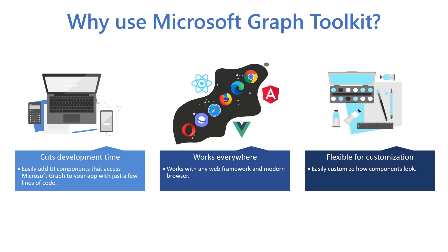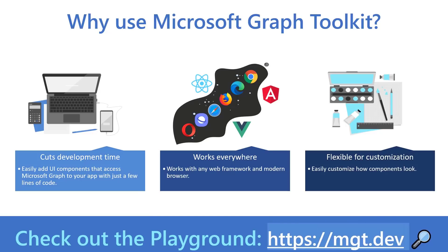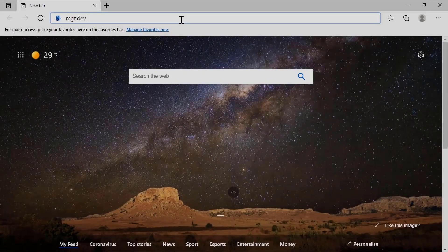Microsoft Graph Toolkit components come with pre-built UI that looks and feels like Microsoft experiences. However, they're fully customizable. If you would like to customize the components and match the component styling with your app, you can use CSS custom properties and templating. There's a great place to discover Microsoft Graph Toolkit components, which is the playground. Let's check the playground and see what is available in the collection of components. Let's go to MGT.dev, which is the playground.